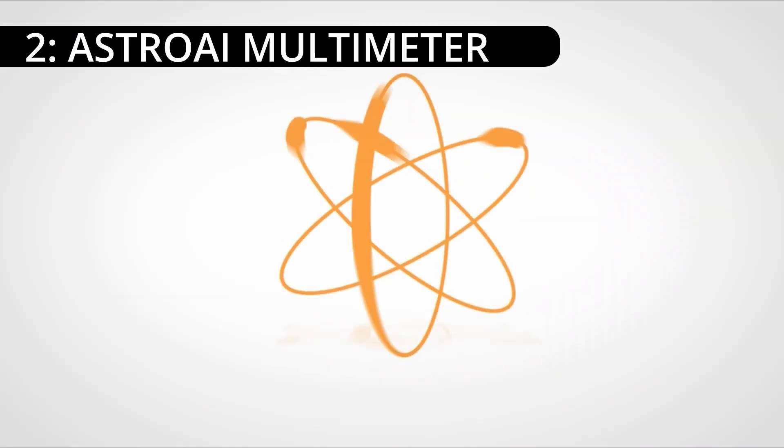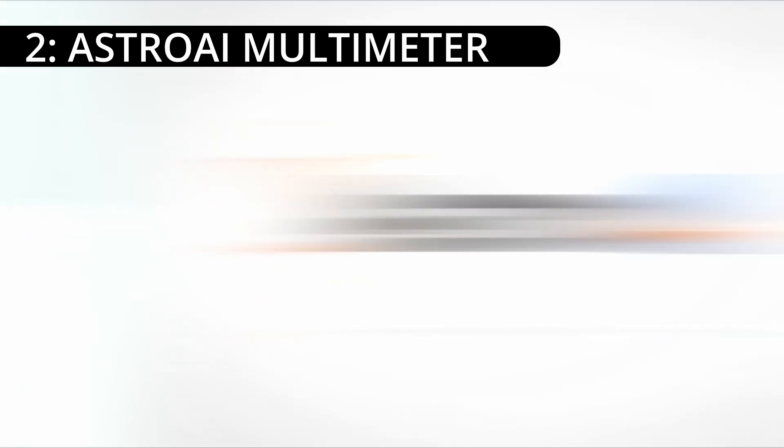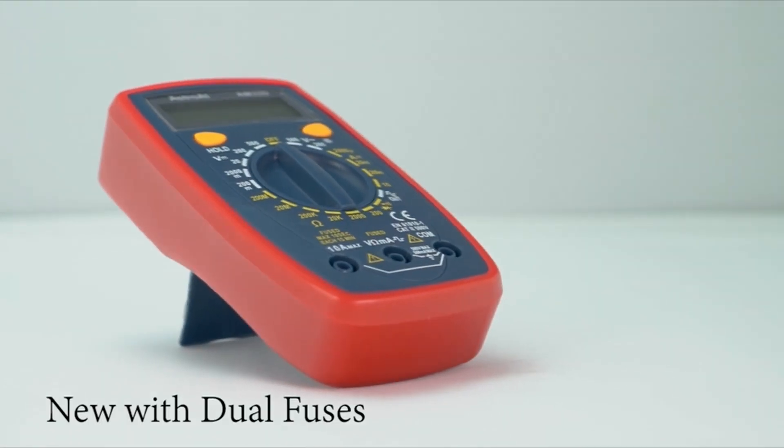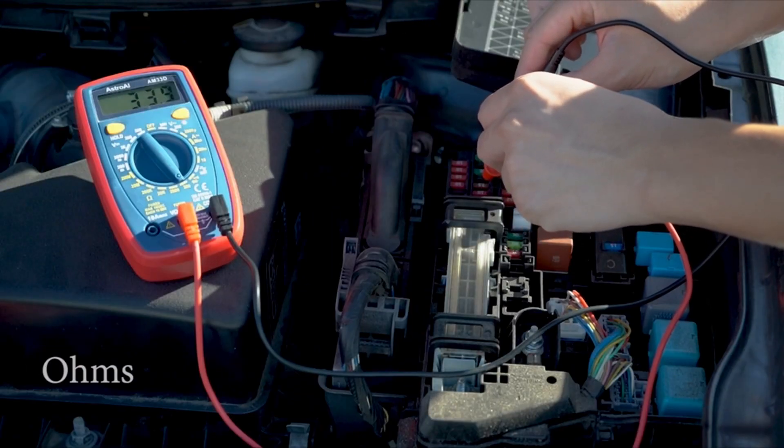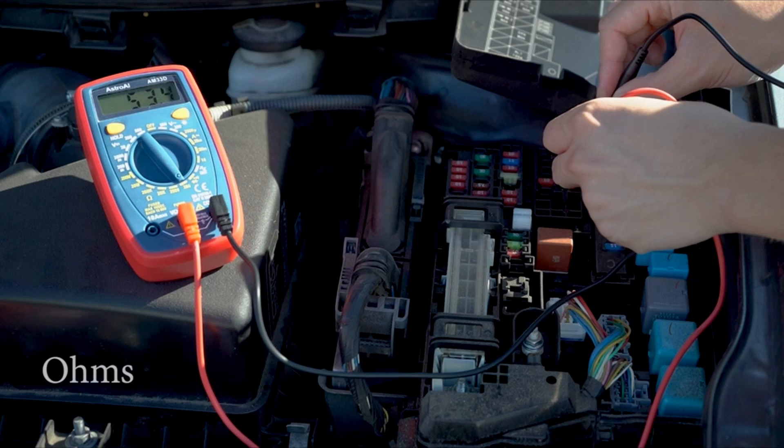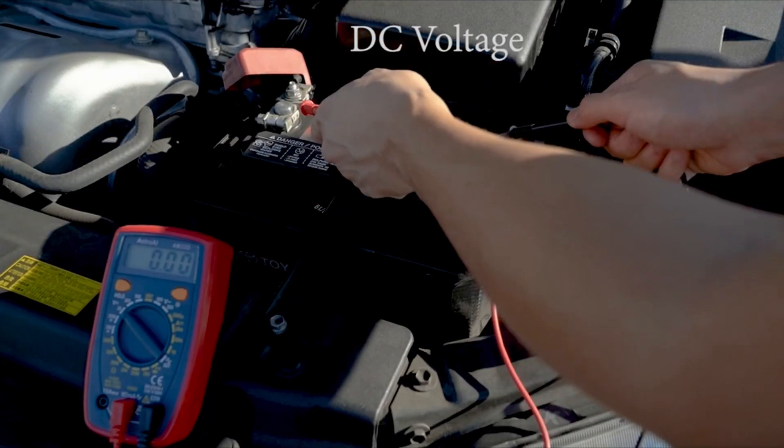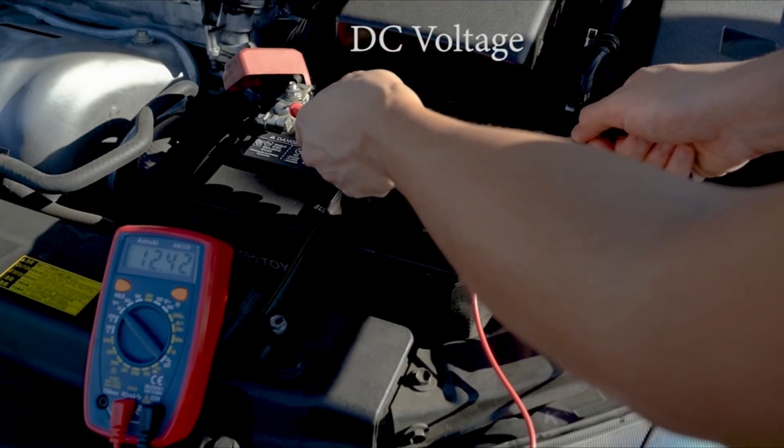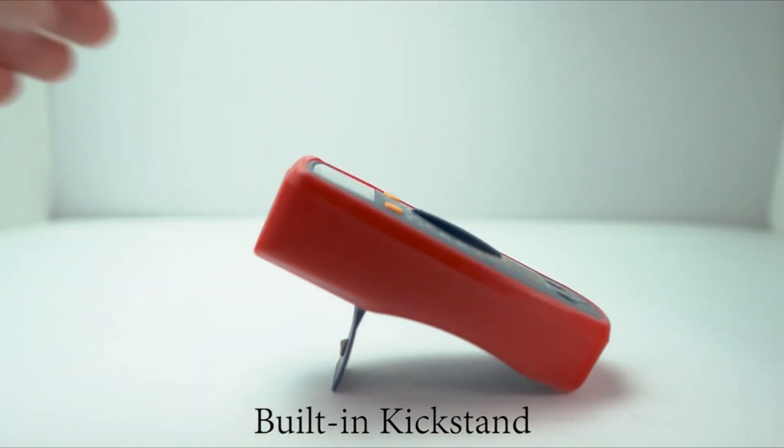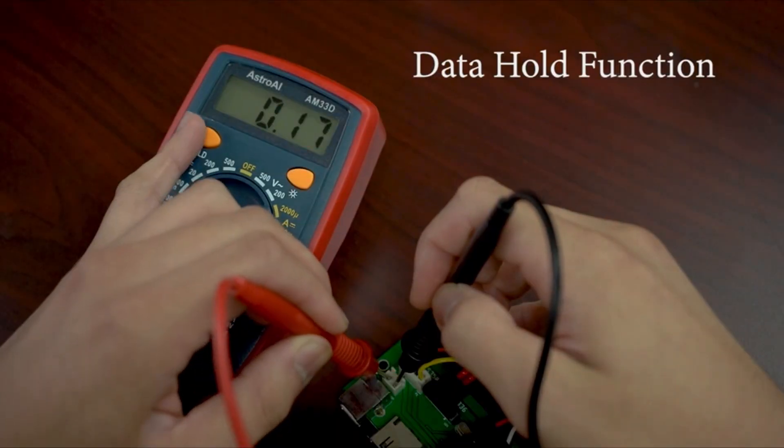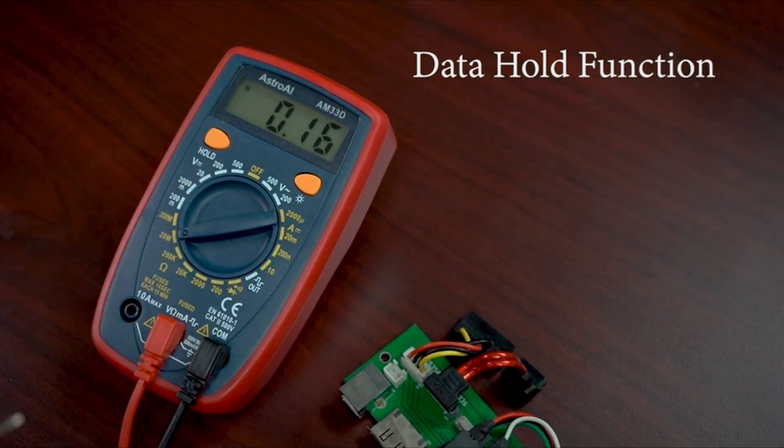On number 2, Astro-AI Multimeter. The Astro-AI Multimeter is a digital multimeter with 2000 counts that measures DC and AC voltage, resistance, and current. It also functions as an ohm volt amp tester and can test live wires for continuity. With an impressive score of 8.5 out of 10 based on a total of 998 reviews, it has garnered positive feedback from users.